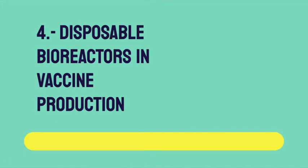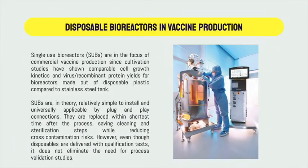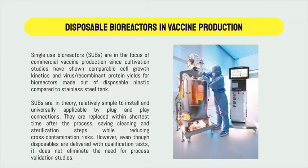Another way to produce a vaccine is through disposable bioreactors. Single-use bioreactors are in the focus of commercial vaccine production since cultivation studies have shown comparable cell growth kinetics and virus/recombinant protein yields for bioreactors made of disposable plastic compared to those made of steel. Single-use systems are relatively simple to install and universally applicable by plug-and-play connections. They are replaced quickly after the process, saving cleaning and sterilization steps while reducing cross-contamination risks. However, even though disposables are delivered with qualification tests, this does not eliminate the need for process validation studies.